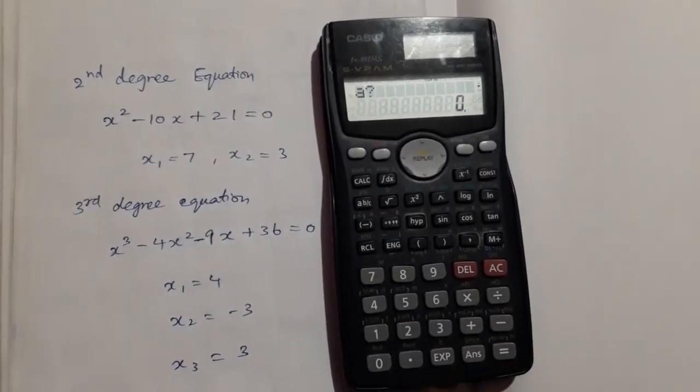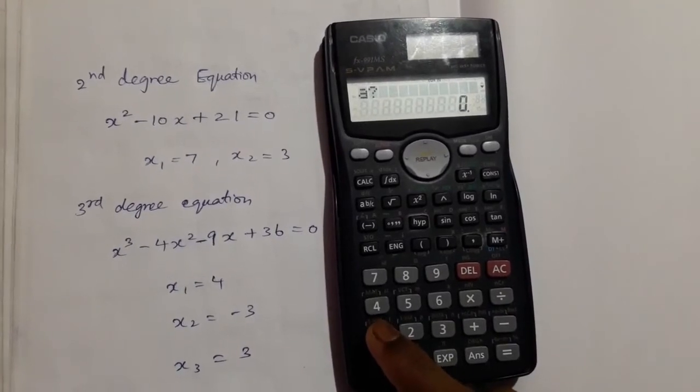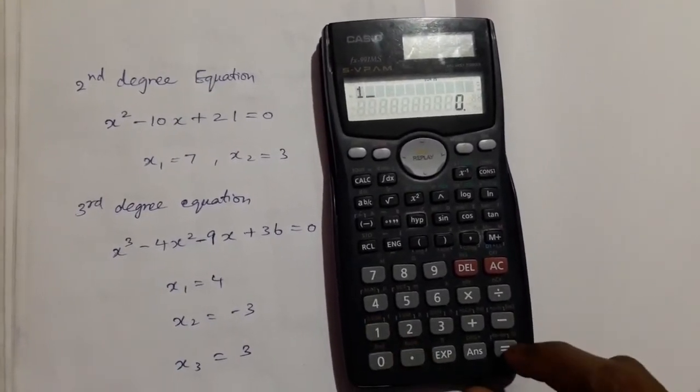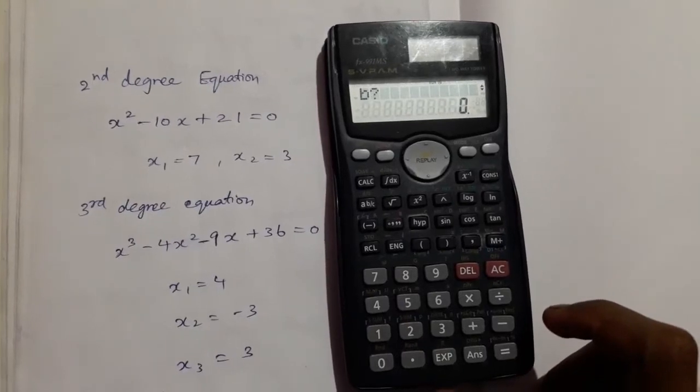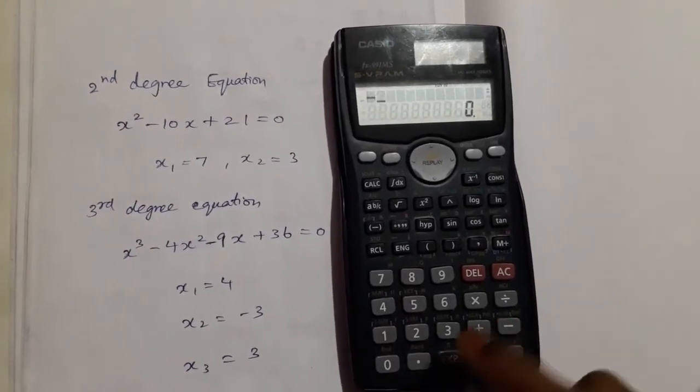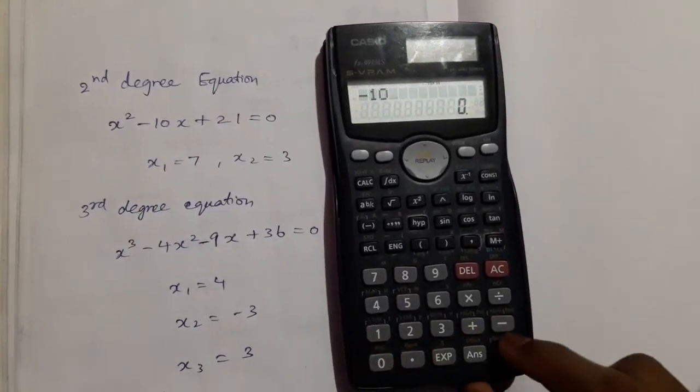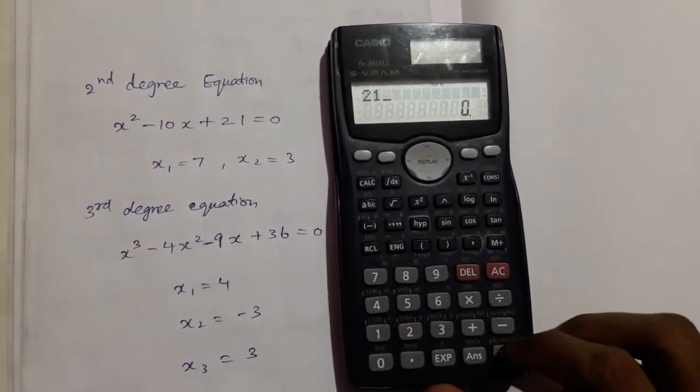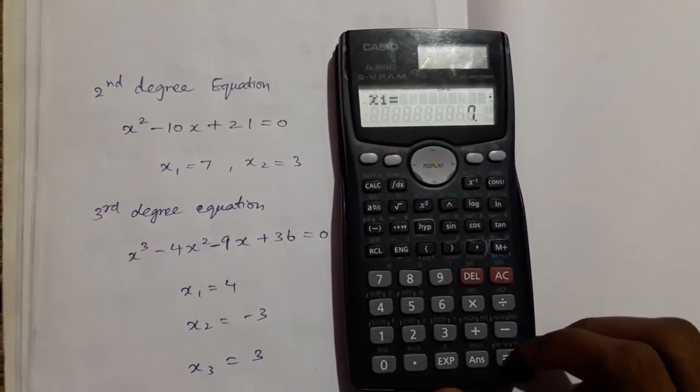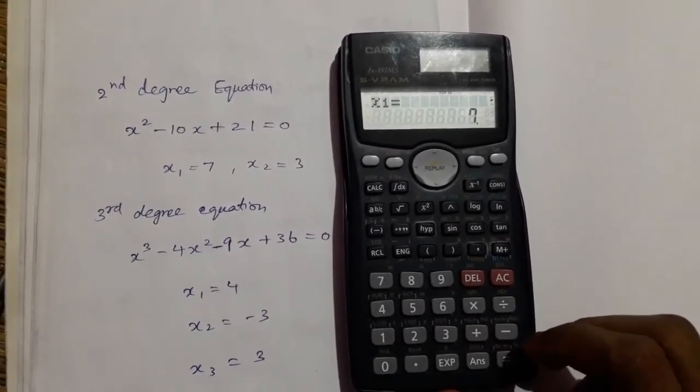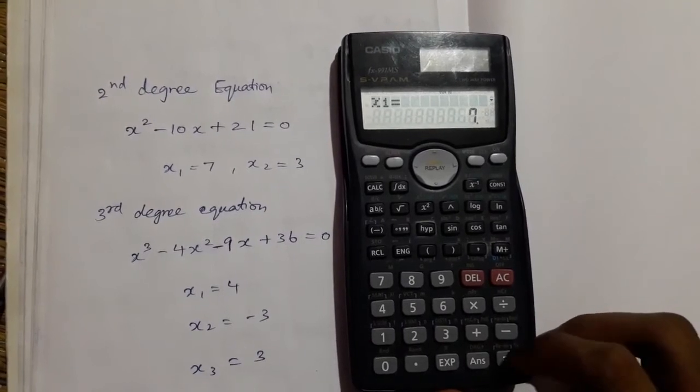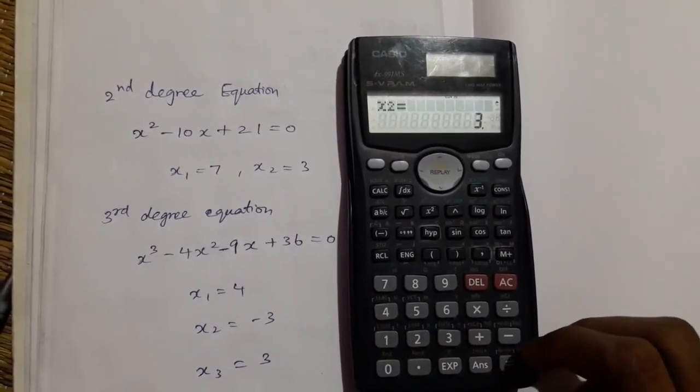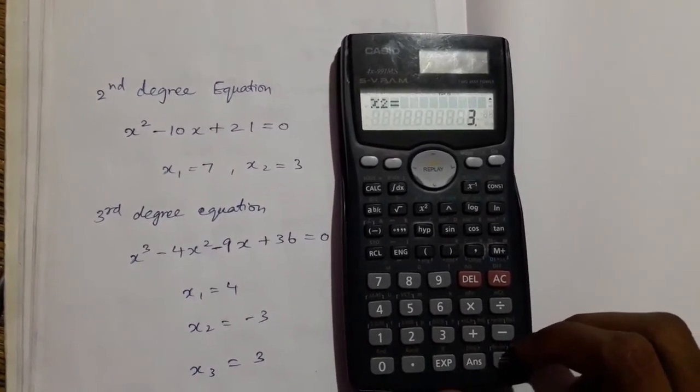And a constant, then press equal to. We get an answer: x1 is equal to 7 and x2 is equal to 3.